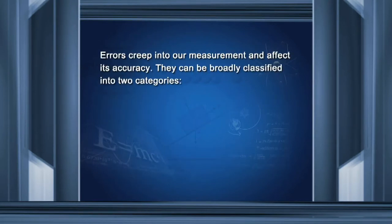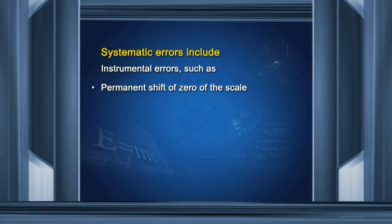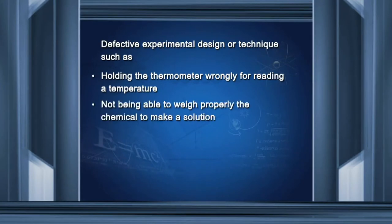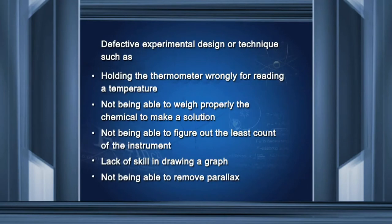Errors creep into our measurements and affect their accuracy. Errors can be broadly classified into two categories: systematic errors and random errors. Systematic errors include errors in the instrumentation, such as a permanent shift of the zero of the scale, non-uniform calibration of the scale, poor thermal contact with the substance whose temperature is to be measured, a stopwatch which is running slow, and a non-uniform resistance wire. A second category of systematic errors arises from defective experimental design or techniques, such as holding the thermometer wrongly for reading a temperature, not being able to weigh the chemical properly to make a solution, not being able to figure out the least count of the instrument, lack of skill in drawing a graph, and not being able to remove parallax in optical experiments.